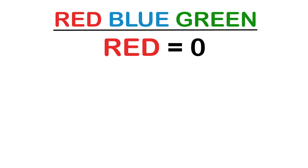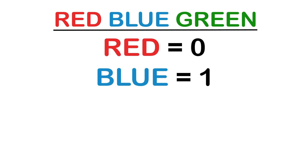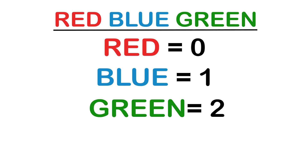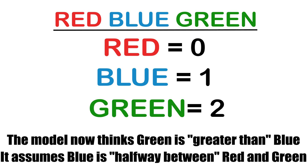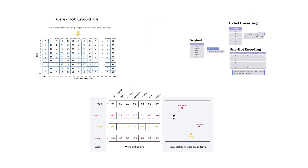Label encoding would convert this to red equals zero, blue equals one, green equals two. The problem is that the model now thinks green is greater than blue and assumes blue is halfway between red and green. These numerical relationships are completely artificial — colors don't have natural ordering.